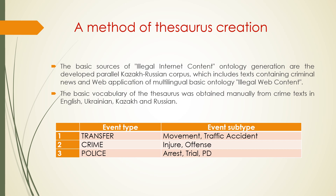The basic vocabulary of the thesaurus was obtained manually from crime texts in English, Ukrainian, Kazakh, and Russian. Seven basic thematic categories were selected: movement, traffic, accident, injury, offense, arrest, trial, and police department, which allowed making the thesaurus thematically organized. This choice of categories is conditioned by the subject matter of the information resource used to fill the thesaurus.